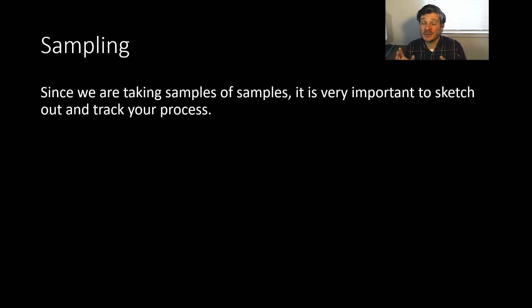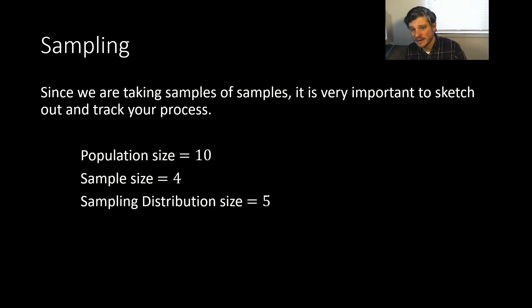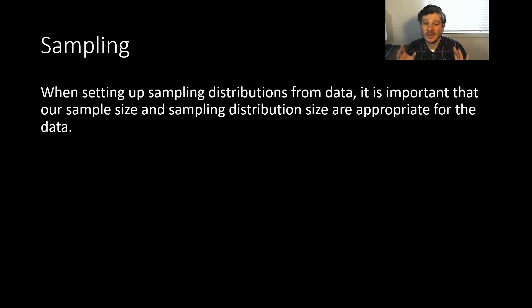Now, we're taking samples of samples. And like I said, this example is way too small. So it is important to sketch out your process though, even in this small example. So I started with a population size of 10. My sample size for each of my samples has a size of 4. And then my sampling distribution size was 5. So I had 5 different samples, each of size 4, taken from a population of size 10. So we have 3 different sizes involved in this sampling. And it's just really important that we really keep track of this. We sketch out what we're trying to do so that we don't get confused and start using the wrong variables and the wrong place.